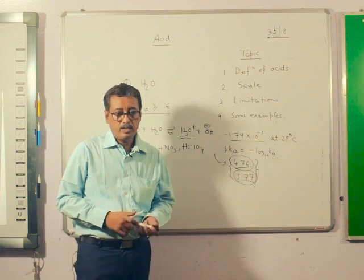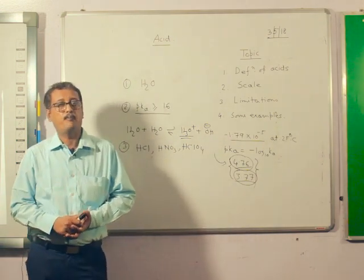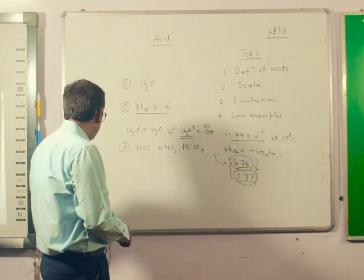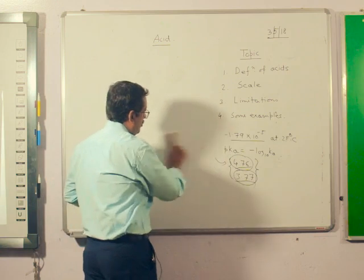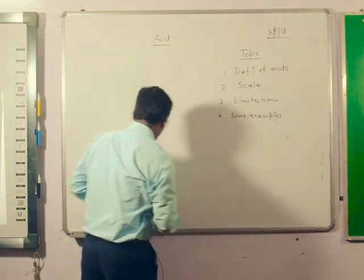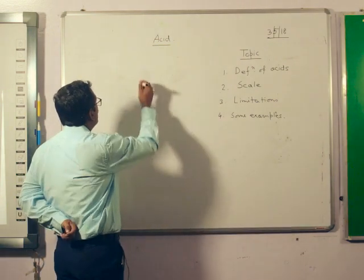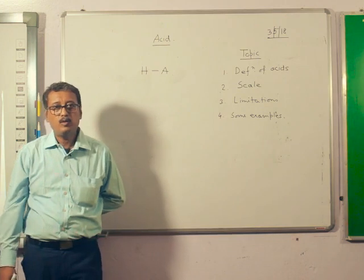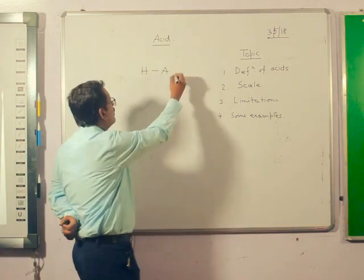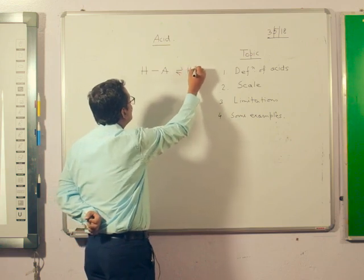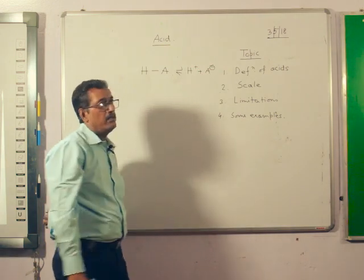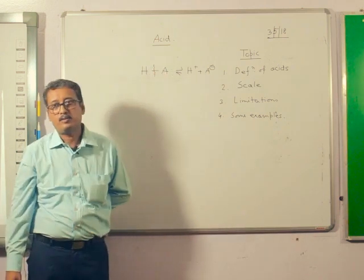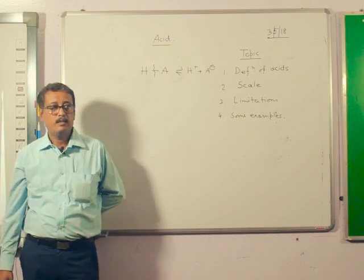Now I will discuss the factors involved in the acidity of organic compounds. The first one is the strength of the HA bond. When HA liberates acid, it will form H⁺ plus A⁻. The strength of the HA bond is very important - if it is easy to break, the compound will be more acidic.